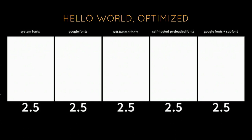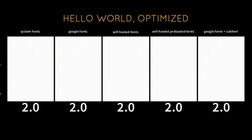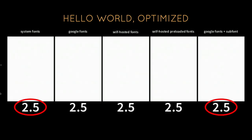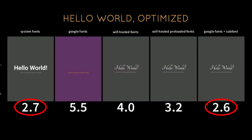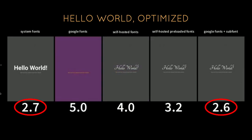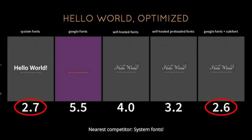Let's compare all the different stages: system fonts, Google Fonts, self-hosted, self-hosted preloaded, and finally Google Fonts with Subfont applied — I did nothing other than apply the tool. What's interesting is that the timing actually competes with system fonts rather than any of the other preloading techniques. The 2.6 looks faster than system fonts, but I can tell you that's not possible — that's a network glitch during measurement using webpagetest.org. But I literally haven't seen a technique that gets you faster font loading than this.